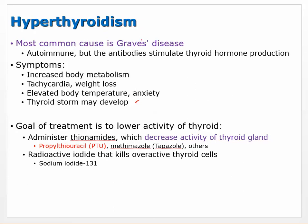Hyperthyroidism — the most common cause is Graves' disease, an autoimmune disorder where antibodies stimulate rather than block thyroid hormone production, resulting in a very active thyroid gland. Symptoms include increased metabolism, tachycardia, elevated body temperature, and anxiety. It can worsen to thyroid storm, a runaway feedback loop where thyroid hormone builds out of control. The goal is to lower thyroid hormone by administering thionamides, a category that decreases thyroid gland activity.